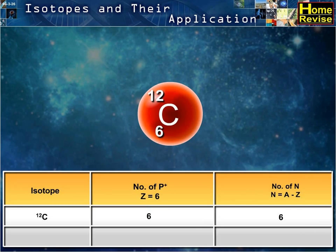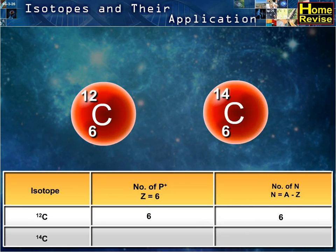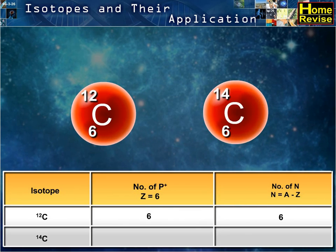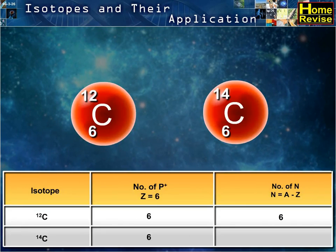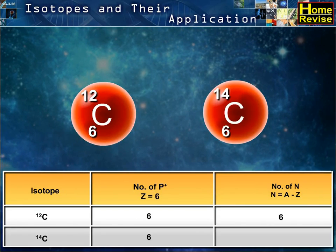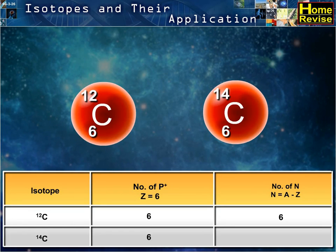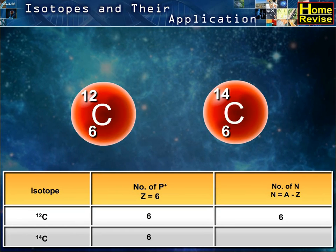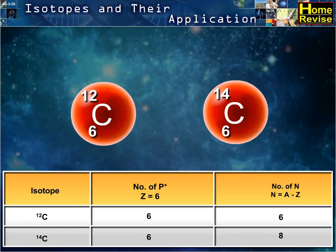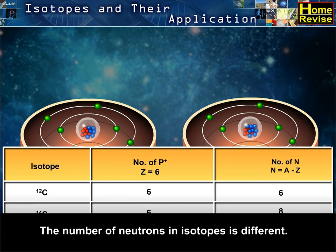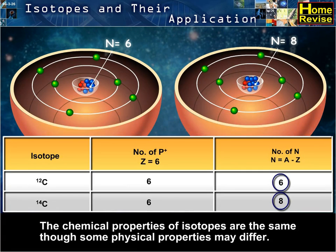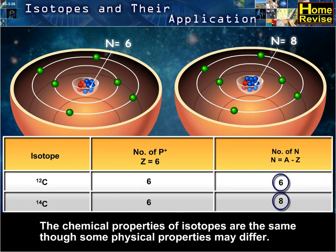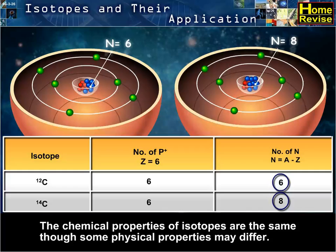For isotope 14C, the number of protons Z is equal to 6, and the number of neutrons N is equal to A minus Z, which equals 8. The number of neutrons in isotopes is different. The chemical properties of isotopes are the same, though some physical properties may differ.